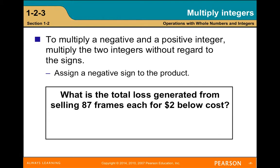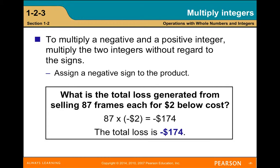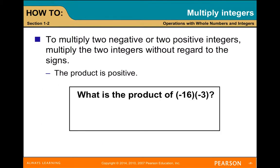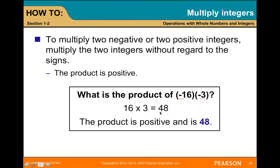To multiply a negative and positive integer, multiply the two integers without regard to sign and assign the negative sign to the product. For example, selling 87 frames each at two dollars below cost: 87 times negative 2 equals negative 174 — a total loss of negative $174. To multiply two negative integers, multiply without regard to sign and the result is positive. For example, negative 16 times negative 3 equals positive 48.